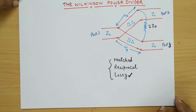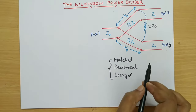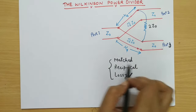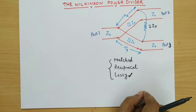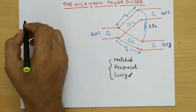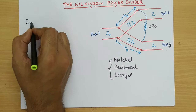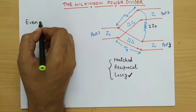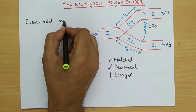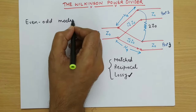For finding the S-parameters of this three-port network, we follow a method called even-odd mode analysis. The method name is even-odd mode analysis.